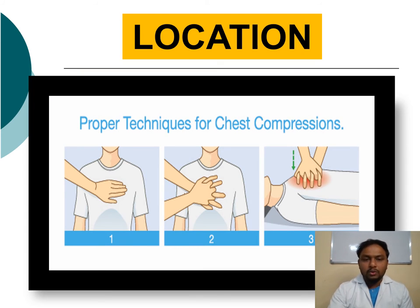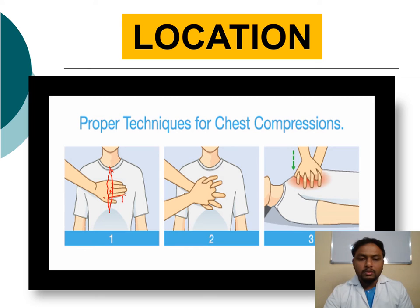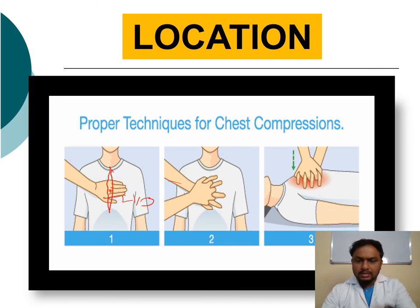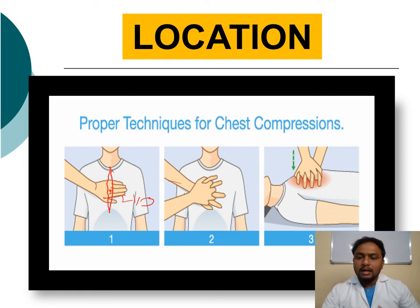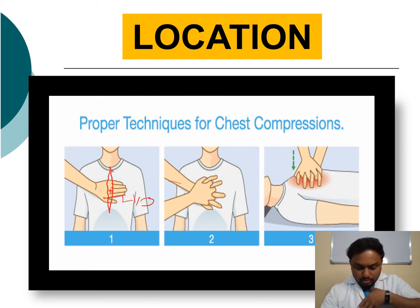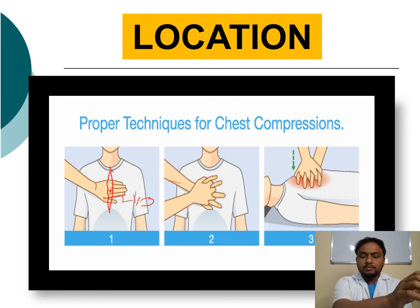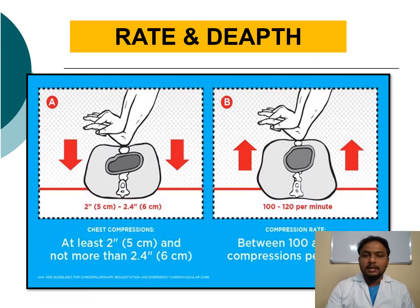For proper hand placement: place the non-dominant hand on the lower one-third of the sternum, then place the dominant hand on top and interlock the fingers. Use the heel of the palm — not the whole palm — on the sternum. Keep elbows straight; your chest and the patient's chest should be at 90 degrees. If you are compressing correctly, you will feel pain in your back, not your arms.